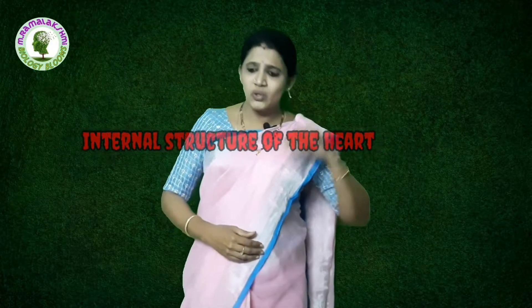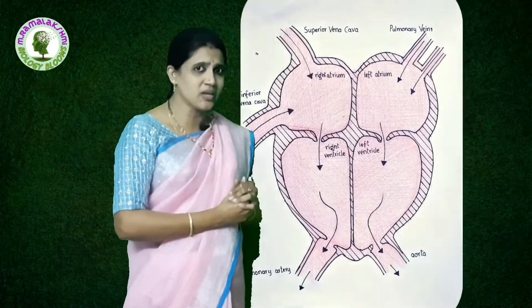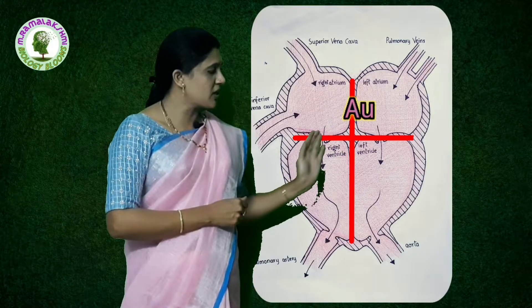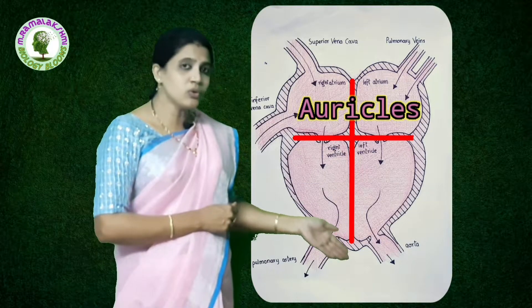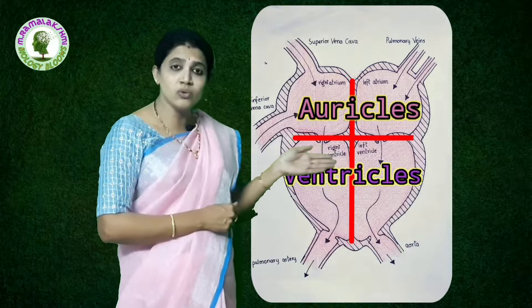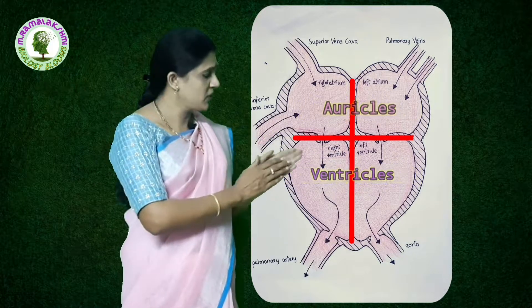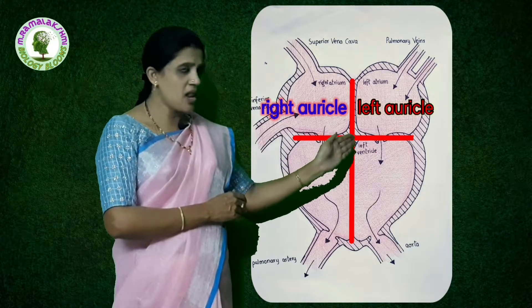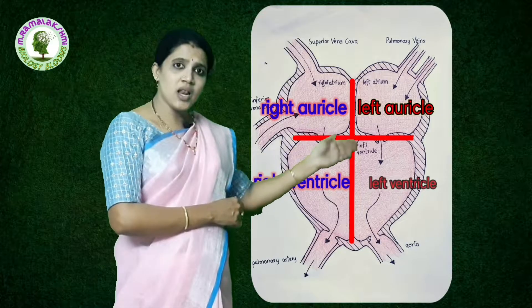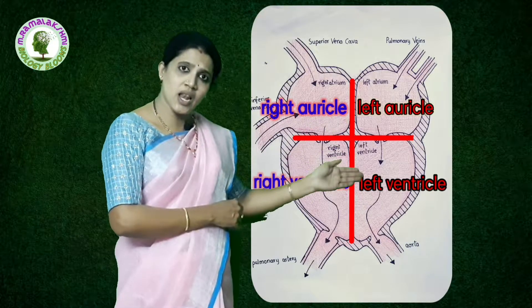Now we will see the internal structure of the heart. The heart is divided into four chambers. The upper two chambers are called auricles and the lower two chambers are called ventricles. So we have the right auricle, left auricle, right ventricle, and left ventricle.